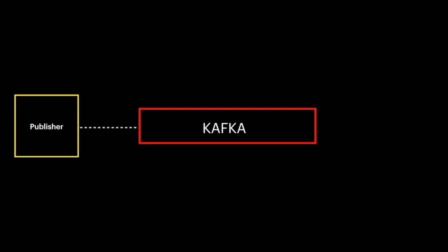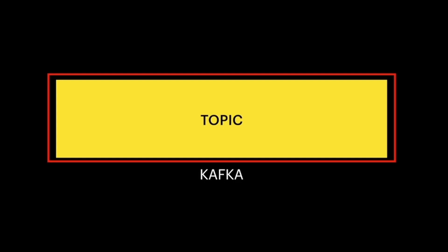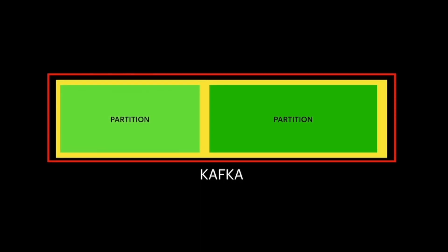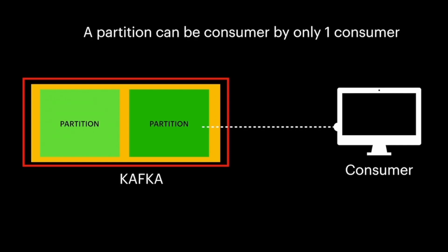Kafka is a distributed commit log. It has a publisher and a subscriber — the publisher pushes messages into Kafka and the subscriber consumes those messages after subscribing to a topic. Kafka contains topics, and the messages we send are stored inside topics. Topics are further subdivided into partitions. The key rule to notice is that a partition can only be consumed by one consumer.